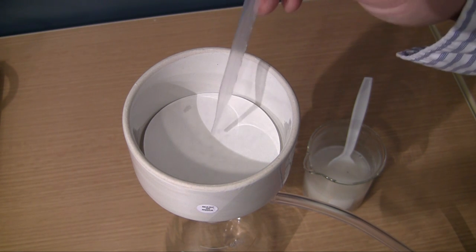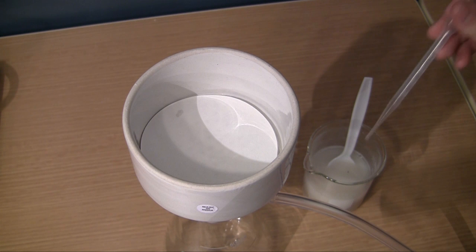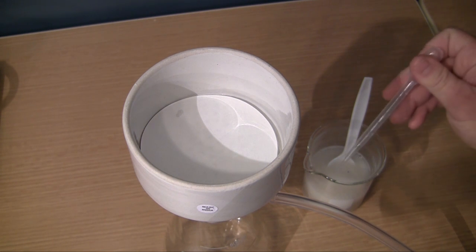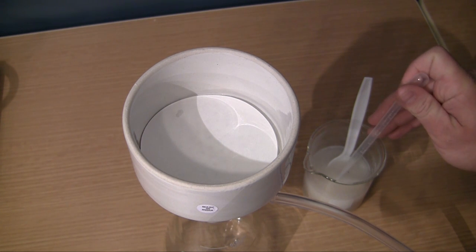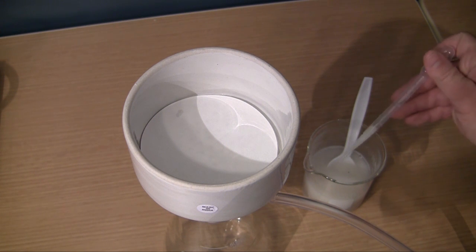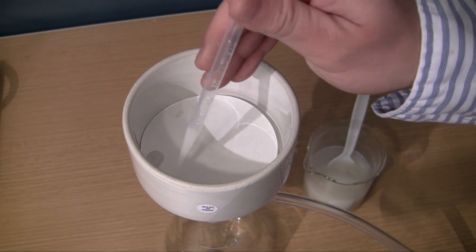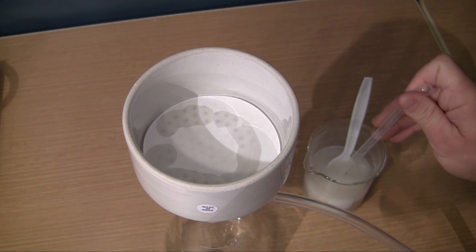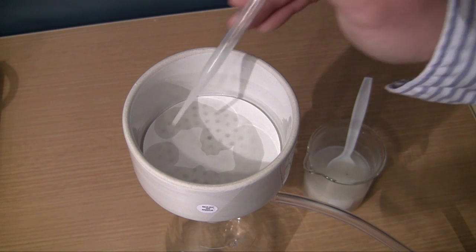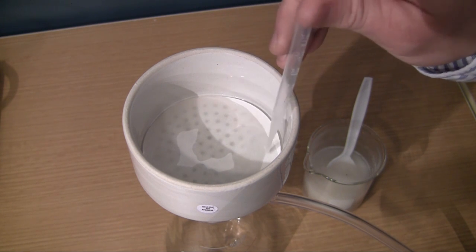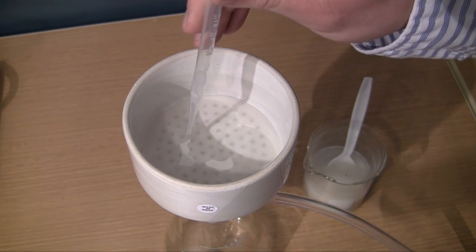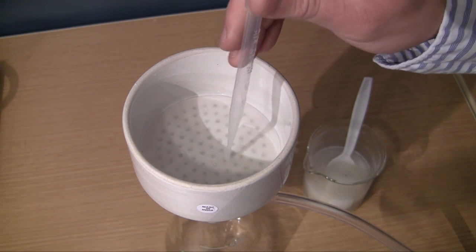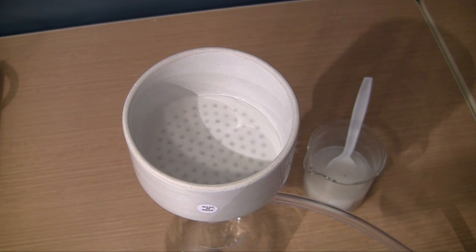So in order to make this paper stick to the funnel a little bit better before we start pouring our mixture in, just go ahead and grab a little water. And as you can see, whenever I pour it on the filter paper right here, it's going to make that paper stick to the funnel and make a real good seal. And this doesn't mess up your experiment at all because this water is actually part of the mixture itself.